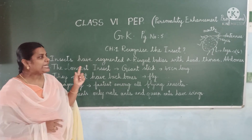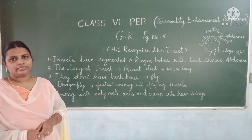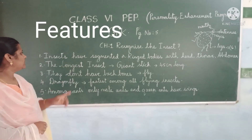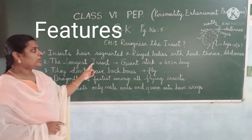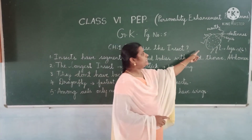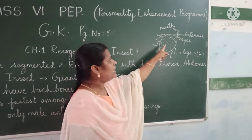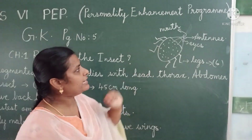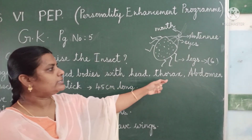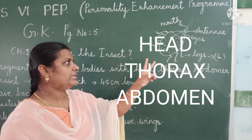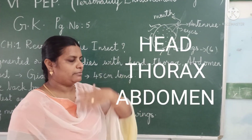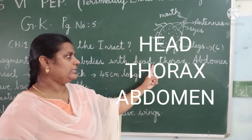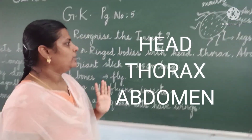So it has some features. If you want to identify it, it will have some features. Insects have segmented or wrinkled bodies. You can see a picture over here — this is an insect. It has a wrinkled body. So, segmented or wrinkled body with the head, thorax, and abdomen. It will have three parts: head, thorax — that is the body part — and abdomen, which means stomach.